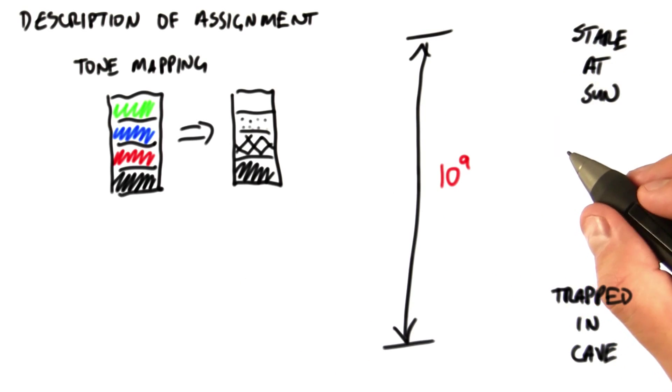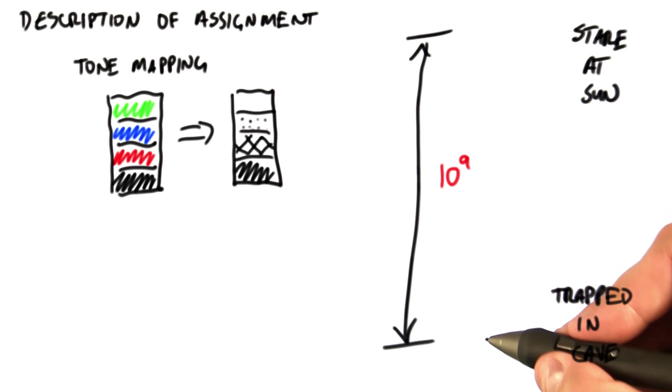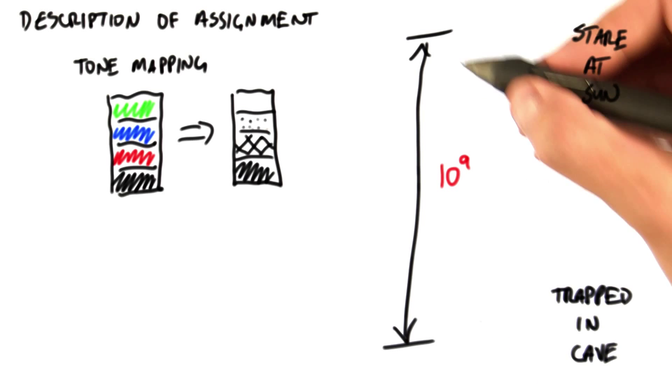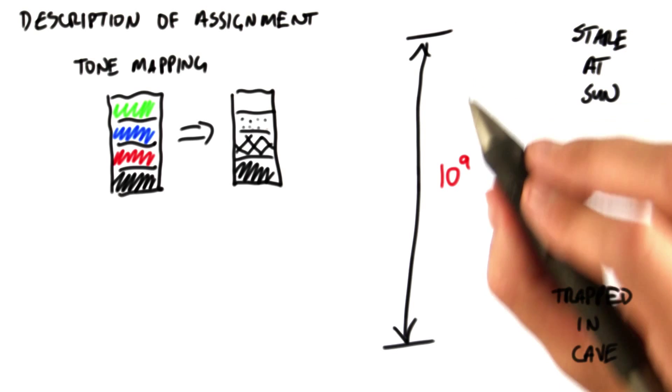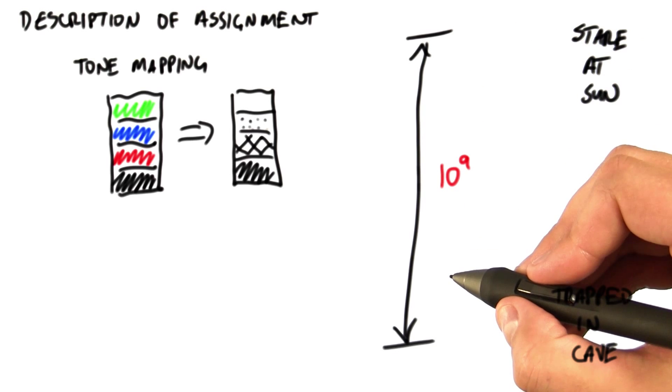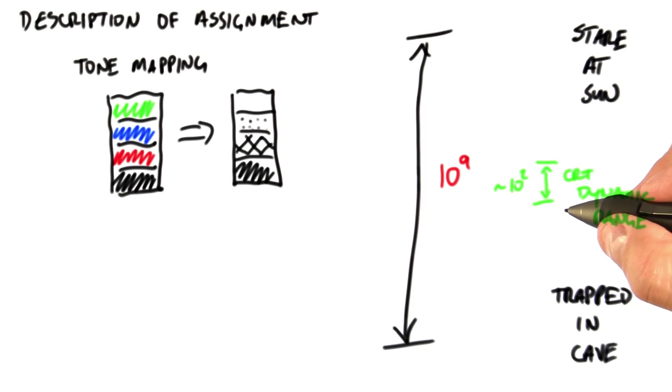The problem is that a real world scene can have brightnesses that span many orders of magnitude in intensity. A piece of white paper in bright sunlight is literally a billion times brighter than on a dark night. And an output device like a CRT can only represent about two orders of magnitude between its brightest and least bright pixel.